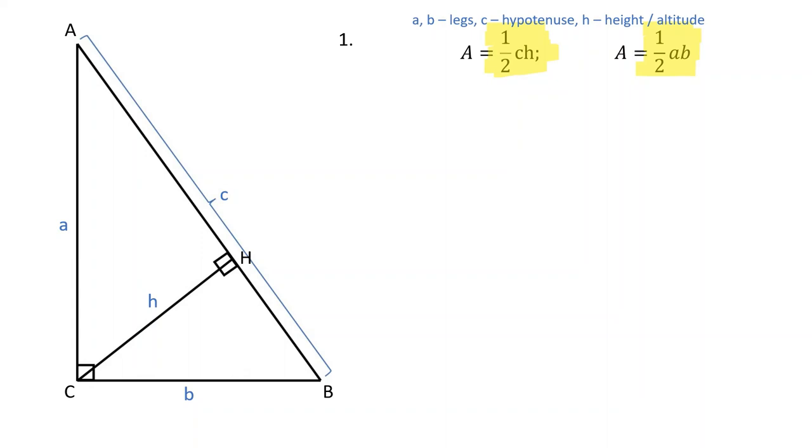Let's equate these two expressions. One-half from both sides cancel each other. Therefore, H is equal to A times B over C.